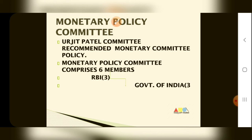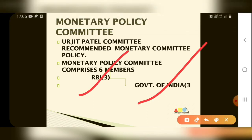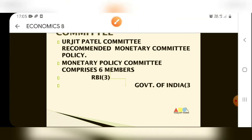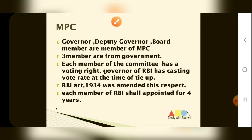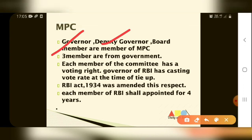The Urjit Patel Committee recommended a monetary policy committee. In 2016 this committee was created. There are a total of 6 members: 3 RBI members and 3 Government of India members. The 3 RBI members are the Governor, Deputy Governor, and one Board member.